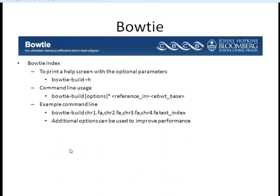As mentioned, these newer programs for aligning next-generation sequences index the genome first. We need to create this index before doing alignment. To do that, we use the bowtie-build program. The command is: bowtie-build, any options, your reference sequence, and the base name for the index. In the example shown, we list each chromosome and 'test_index' becomes the base name of the files generated by bowtie-build. You can use additional options with the -h option or on the website to improve performance.